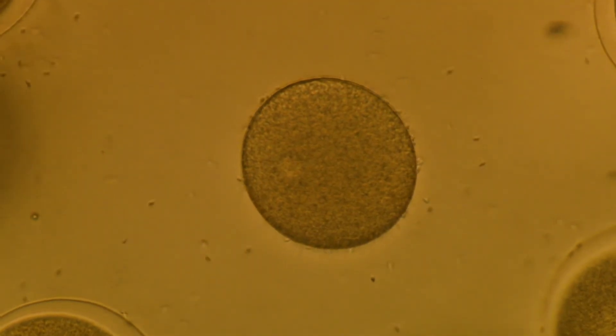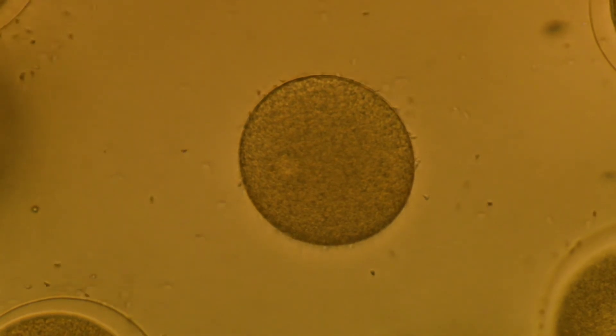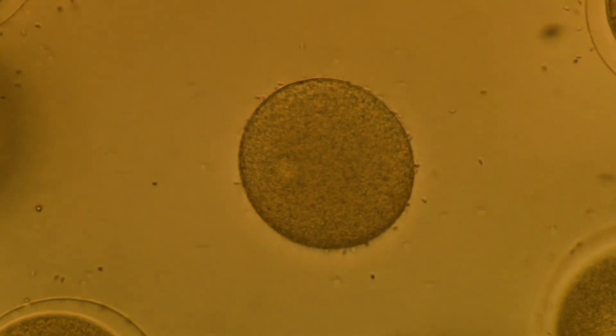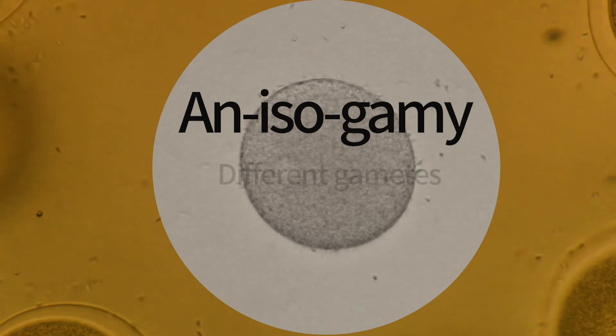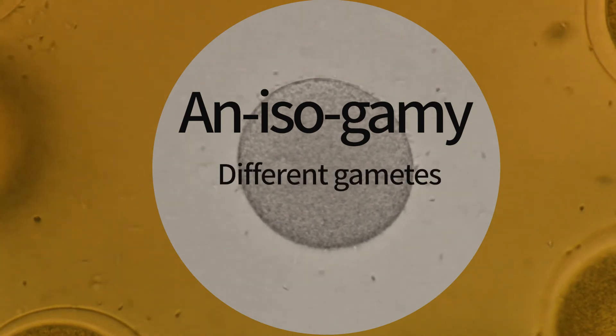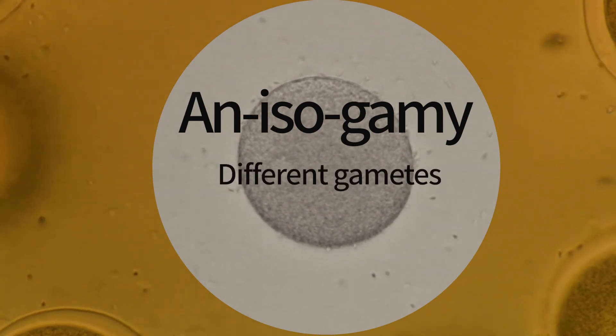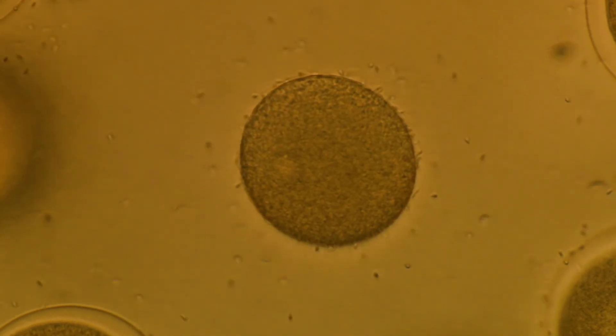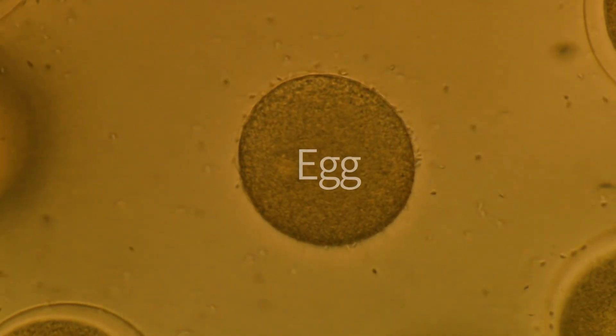In animals and plants, gametes of the two sexes differ a great deal, a phenomenon termed anisogamy. One sex produces large, immobile gametes that are rich in mitochondria and nutrients. We call this sex female and its gametes eggs.